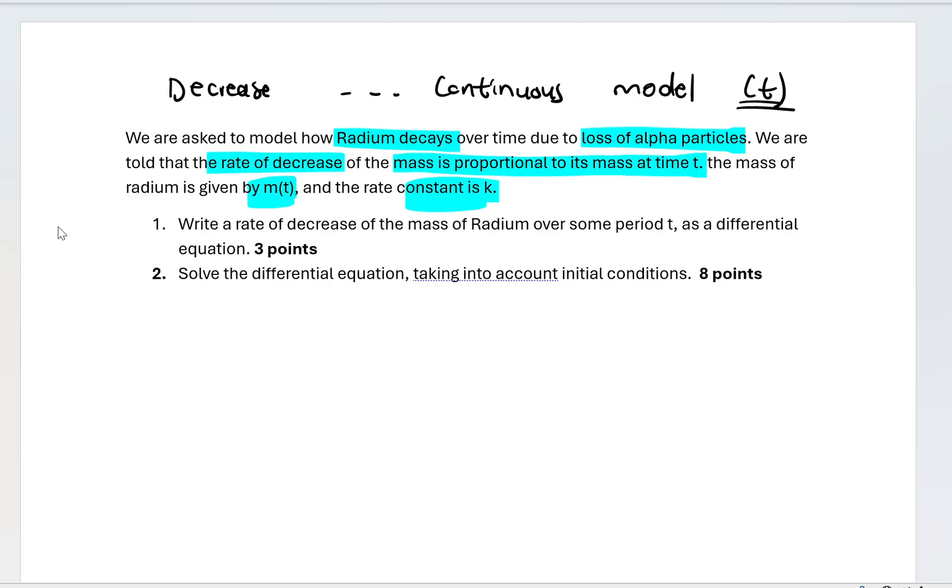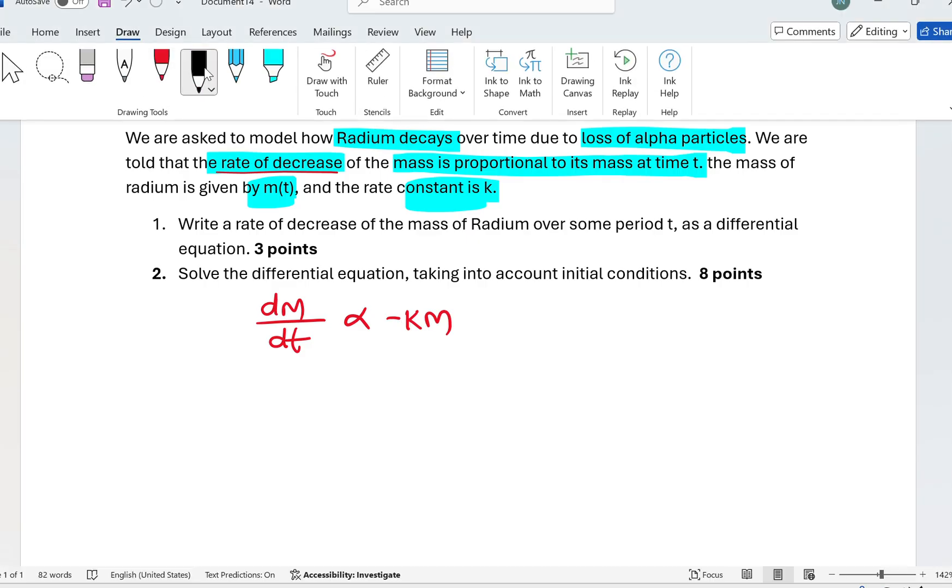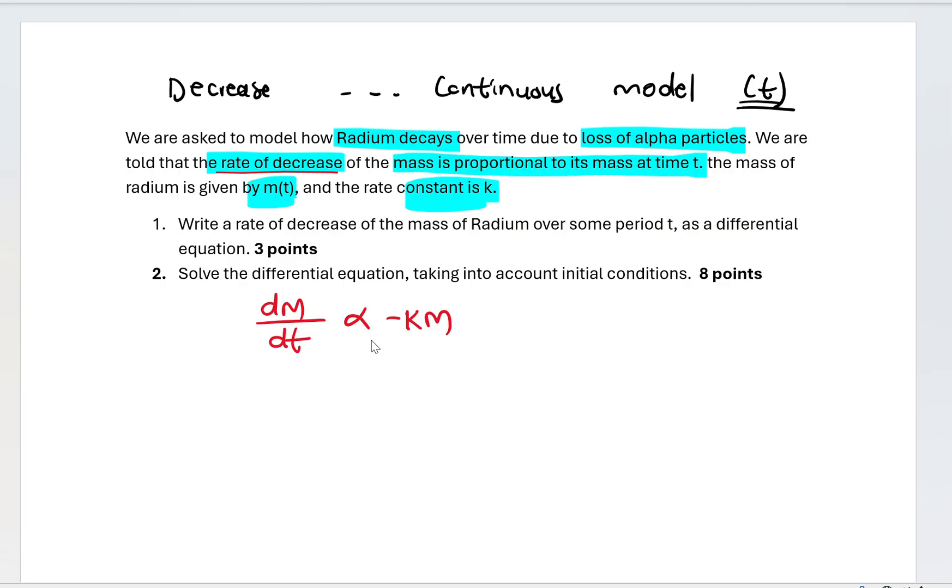Before we even look at what the question says, by reading this, we know that radium is decreasing, decaying, and the rate is decreasing. Our constant in this case is going to be negative k. k is a positive number, but there will be a negative sign before it to show that we are dealing with a rate of decrease.